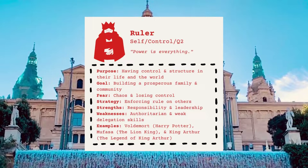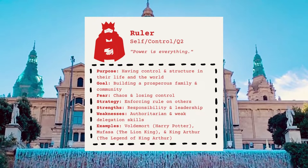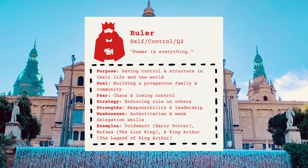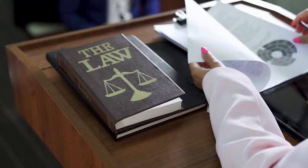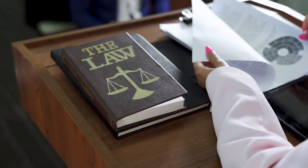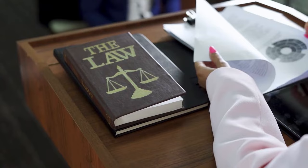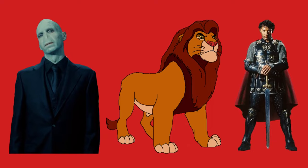The ruler is a self-type archetype that believes control is the solution for bringing order to the world. Their purpose is to gain control over others and create structure in the world, including their own life. These characters often attempt to build a prosperous family or community, and they fear chaos and losing control. To avoid this, they attempt to enforce their rule on others. They are viewed as responsible with great leadership skills, but can also be perceived as authoritarian and unable to successfully delegate. Famous ruler characters include Voldemort, Mufasa, and King Arthur.